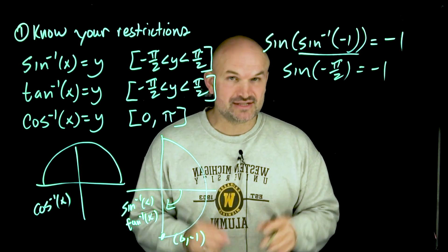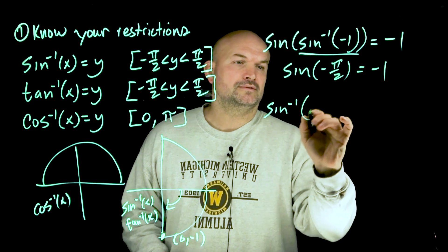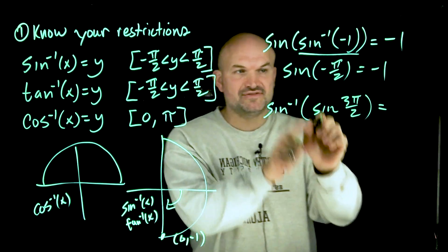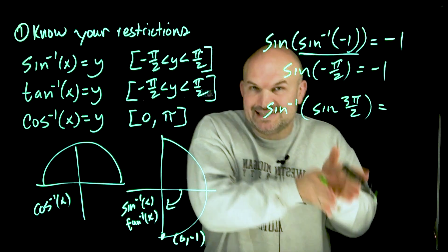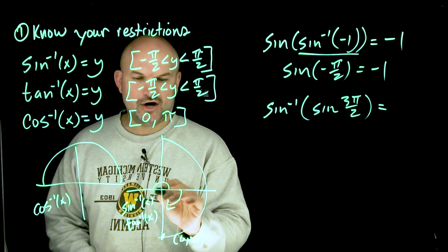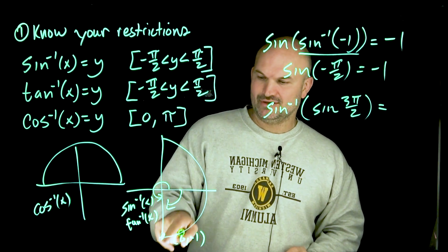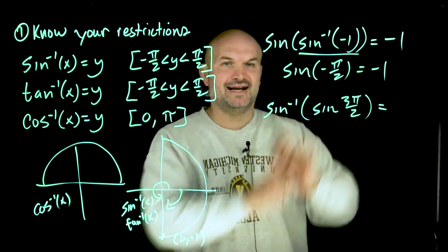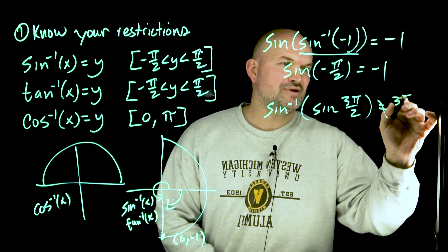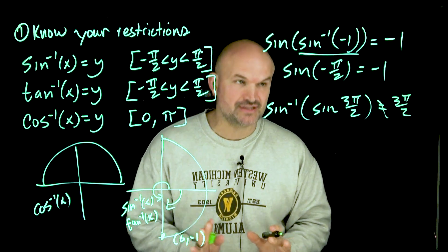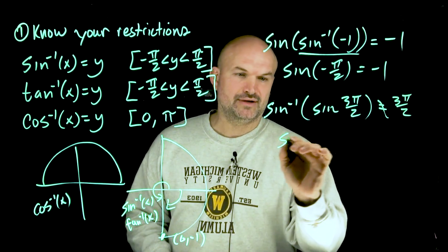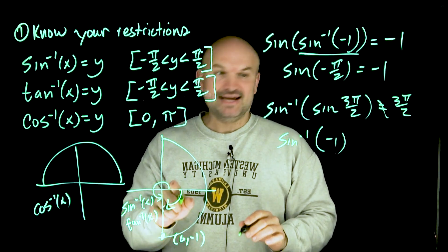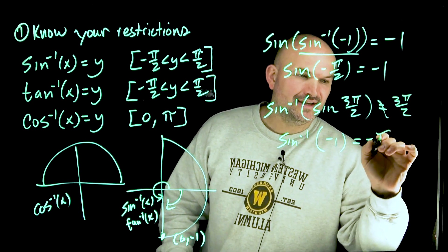Now here is where knowing your restrictions becomes critical — when the composition is switched around. We have sine inverse of sine of three pi over two. Work from inside out: sine of three pi over two equals negative one. Many students will say the sine and sine inverse cancel so the answer is three pi over two — but no, we must know our restrictions. Sine inverse of negative one equals negative pi halves, so the answer is negative pi halves, not three pi over two.